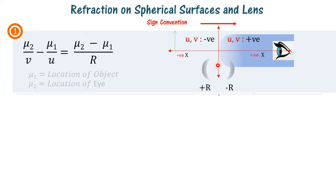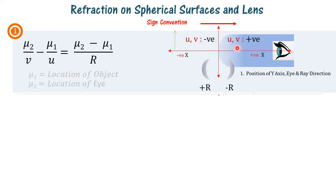First, the y-axis is drawn touching the spherical surface and the medium, and the eye is placed on the right-hand side of the y-axis on the positive x-axis. The ray of light is assumed to be coming from the minus x-axis to the positive x-axis. Second, u and v, if found to be on the negative x-axis, have a negative value; if v is positive, the image is on the positive x-axis.